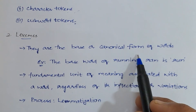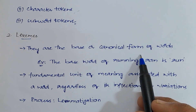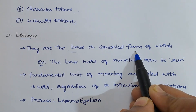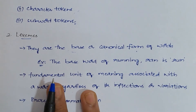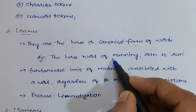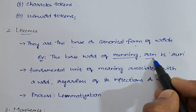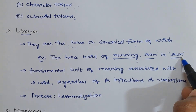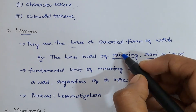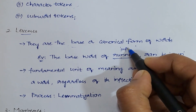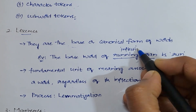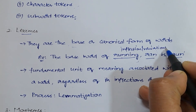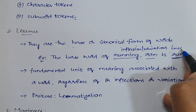Now let's discuss lexemes. Lexemes are nothing but the base or canonical form of words. For example, for words like 'running' and 'ran', the base word is 'run'. 'Running' and 'ran' are known as inflections or variations, and 'run' is known as the base word.